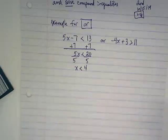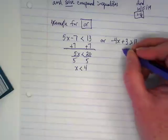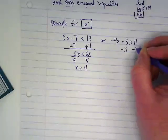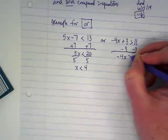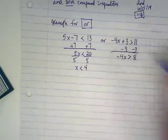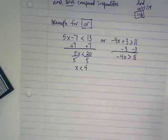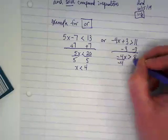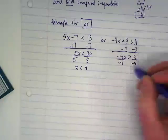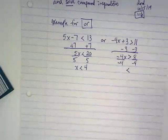What should be my first step on the second one? I'm going to get rid of the 3 or subtract it from both sides. I get negative 4x is greater than 8. What am I dividing by? What does that mean for my symbol?